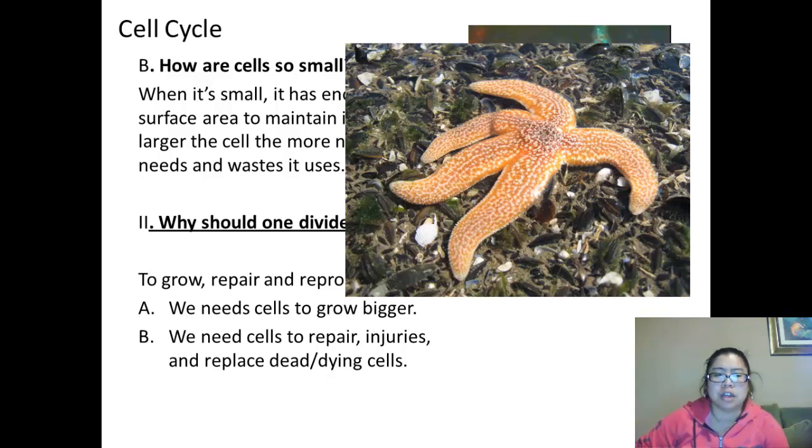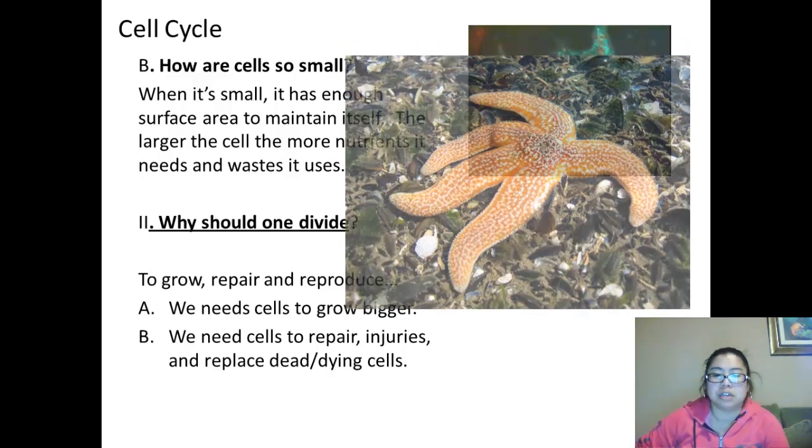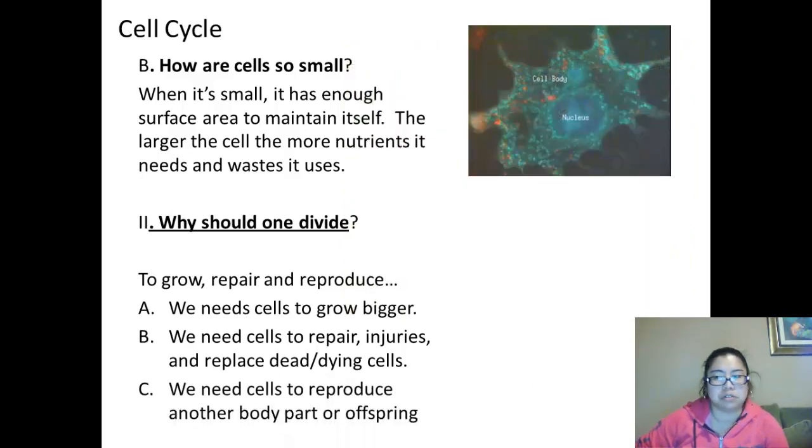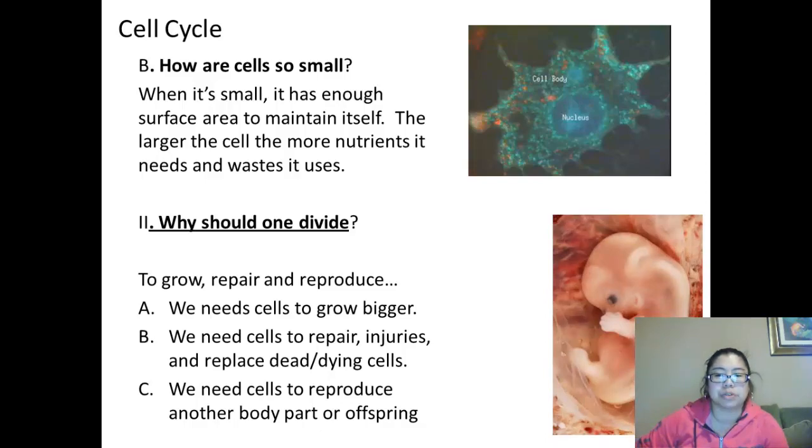Same as a skink, it's a type of lizard. The tail is blue. When it's in danger, it will literally drop its own tail as a decoy and run off from a predator. We need cells to reproduce another body part, just like the starfish or the skink, or produce an offspring, like this picture of a nine-week-old embryo.